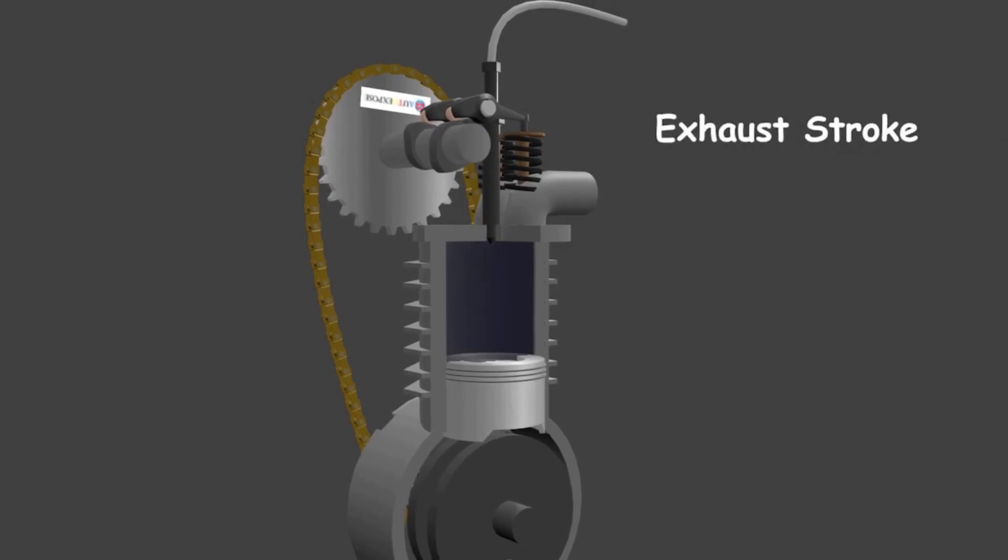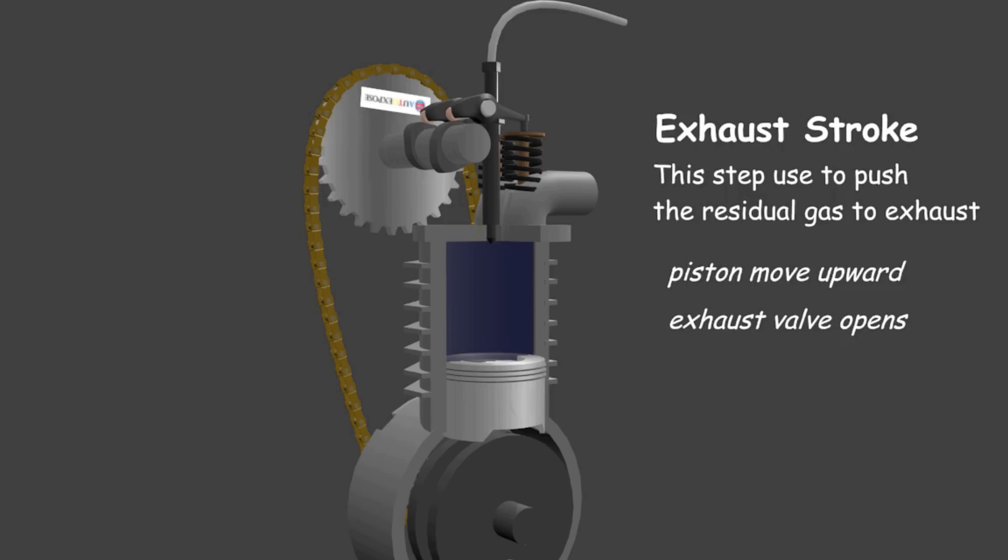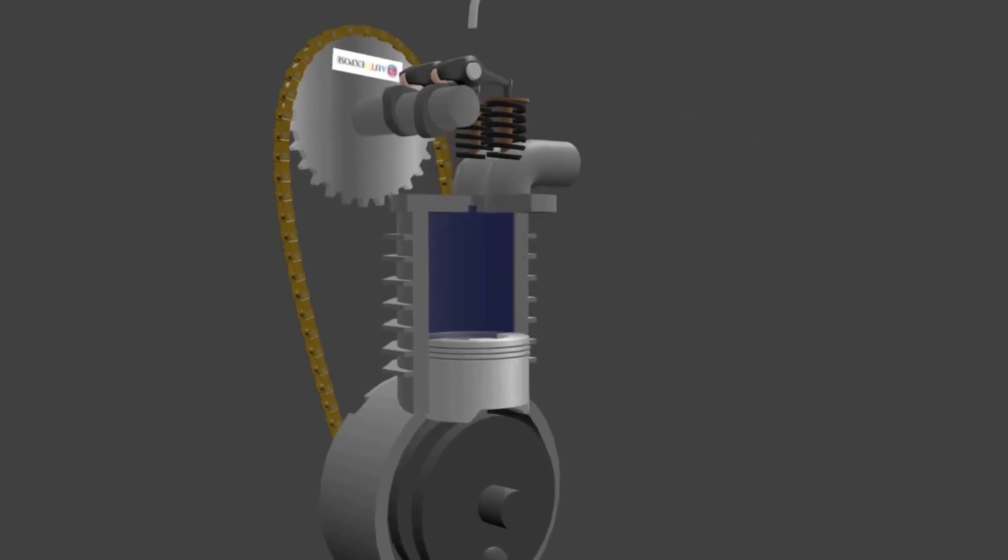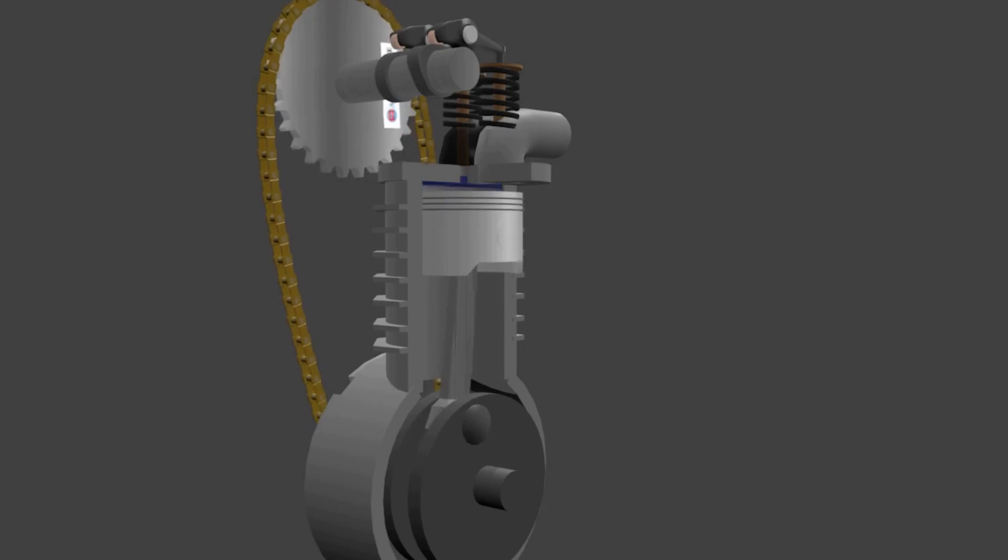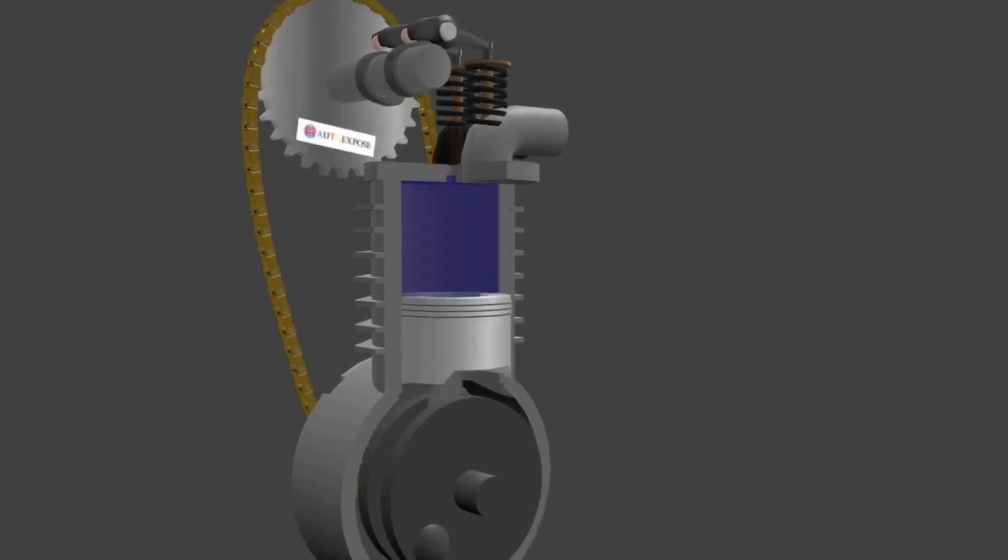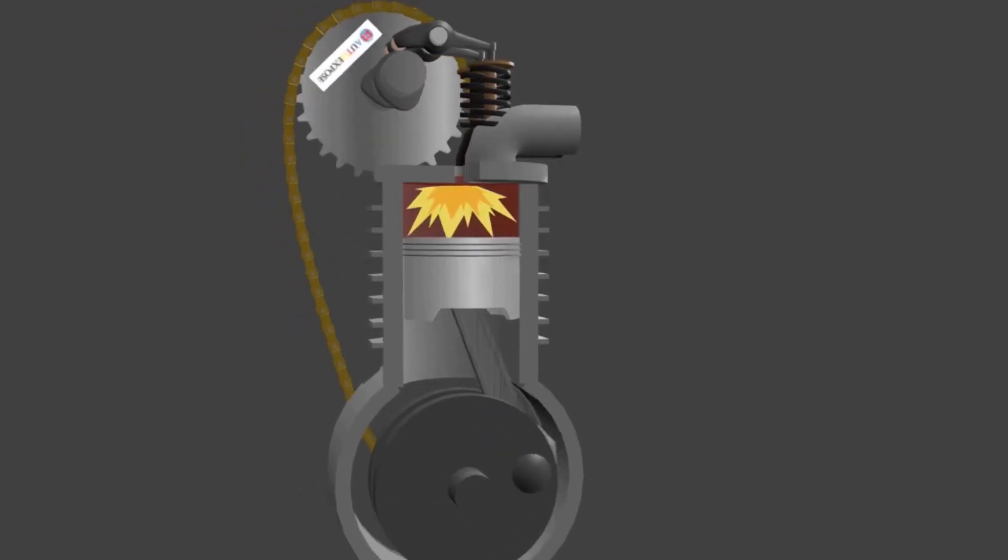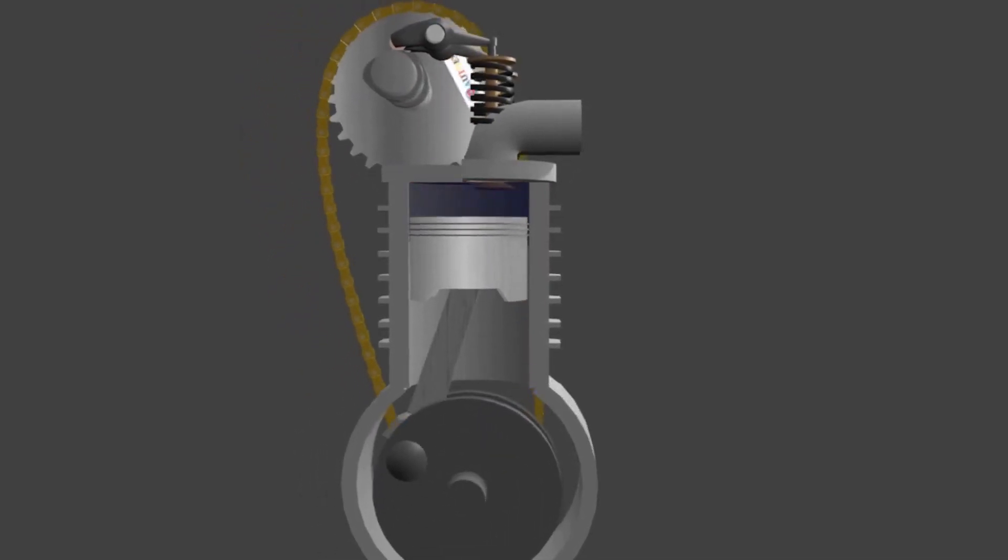Lastly is the exhaust stroke. After combustion, the piston immediately moves back upward. At this time the exhaust valve is open, so that the movement of the piston pushes the residual gases into the exhaust manifold. After reaching the exhaust step, the engine has finished one cycle. After that, piston moves down to do intake stroke and the cycle repeats again.